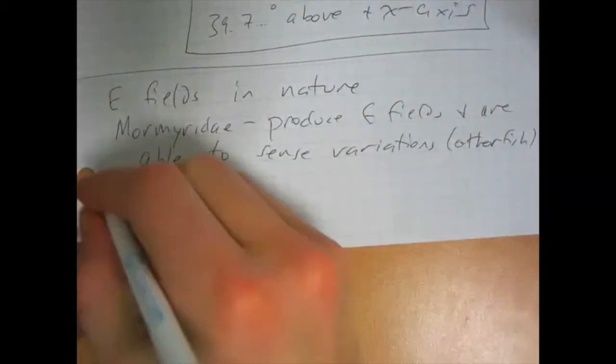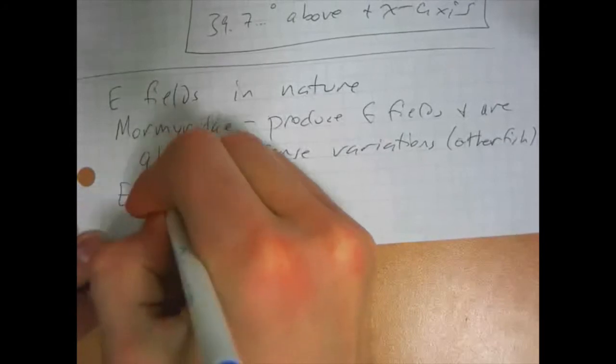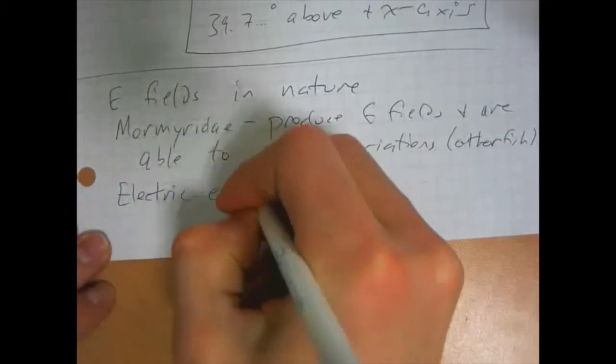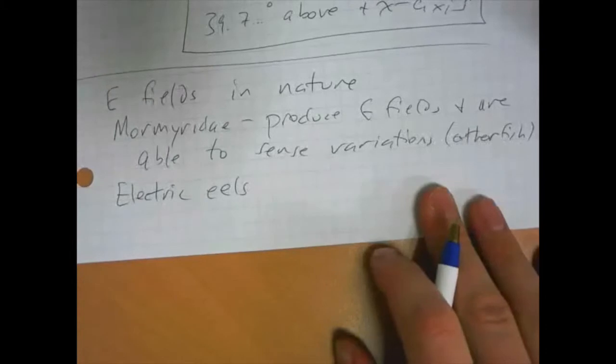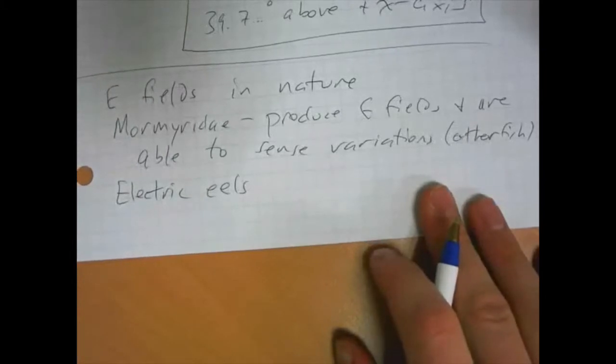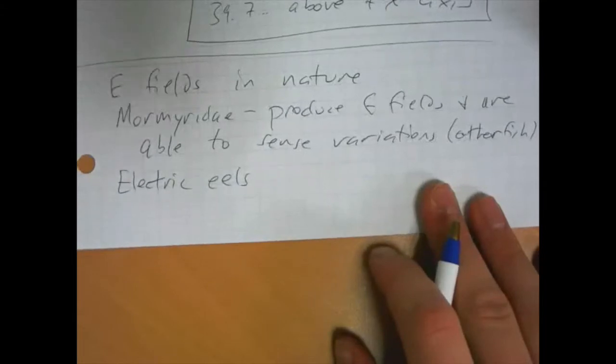There are certain kinds of eels, electric eels. They produce electric fields strong enough to kill small animals and stun bigger ones. So they use their electric fields to kill little animals and eat them, and then they use it on bigger animals to get away. And it can even stun people.